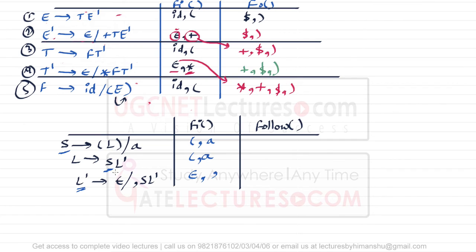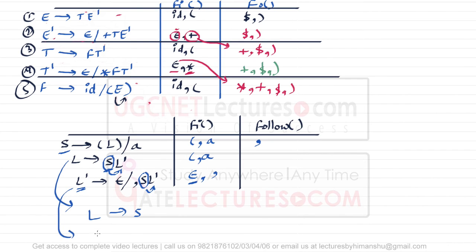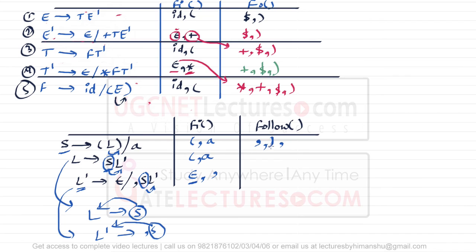For FOLLOW of S: check the right-hand sides of all productions. S appears in two locations. After one occurrence of S we have L'. FIRST of L' is comma, and it also contains epsilon. Because L' can be replaced by epsilon, FOLLOW of L also becomes FOLLOW of S. Since S is the start symbol, FOLLOW of S always contains dollar. So FOLLOW of S contains comma, closing bracket, and dollar.